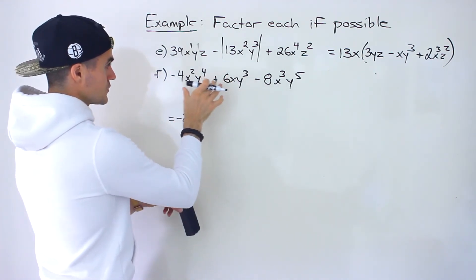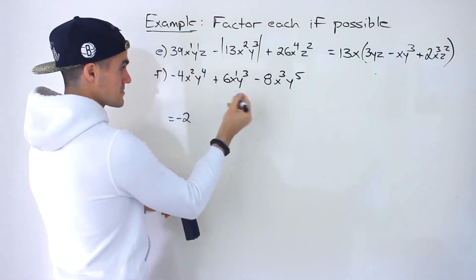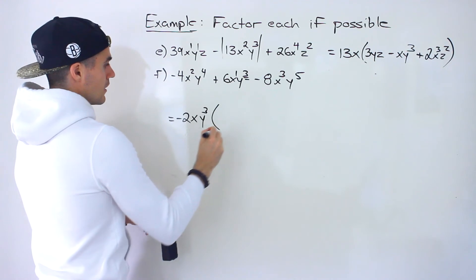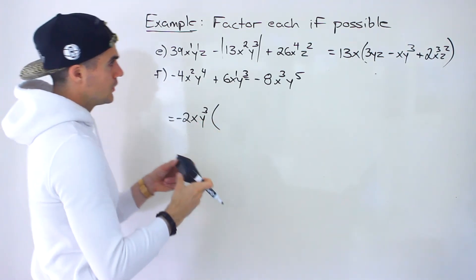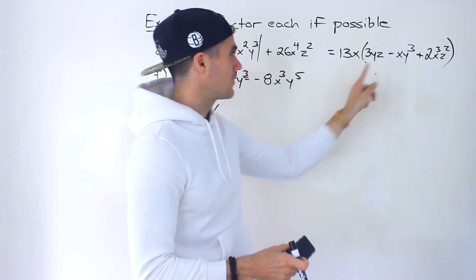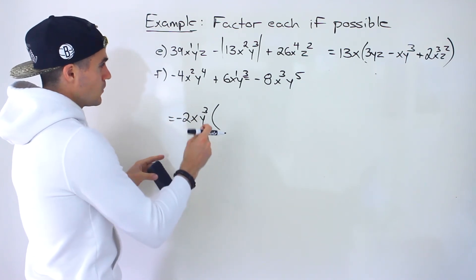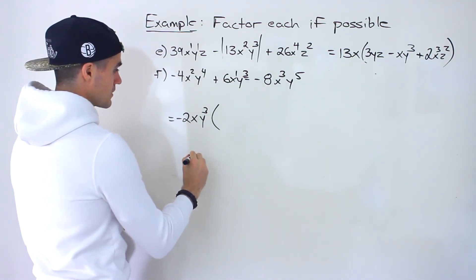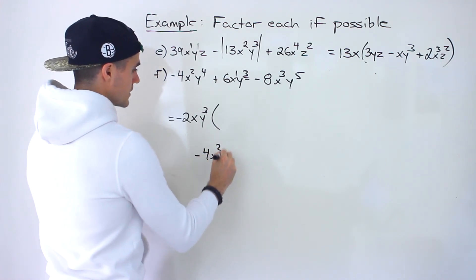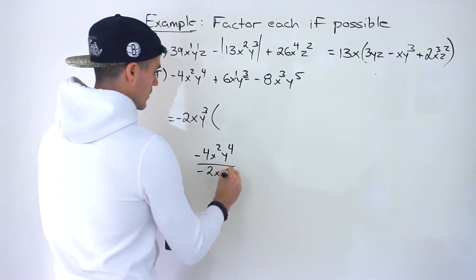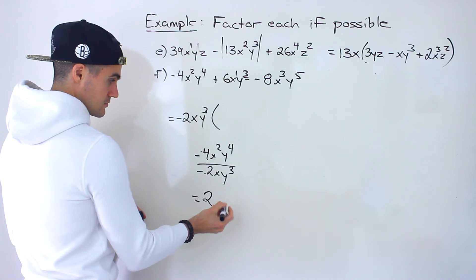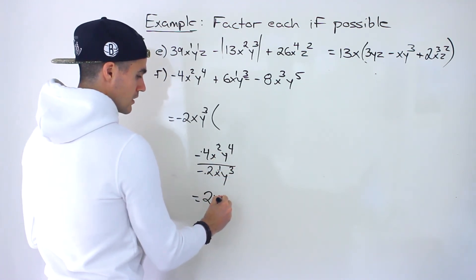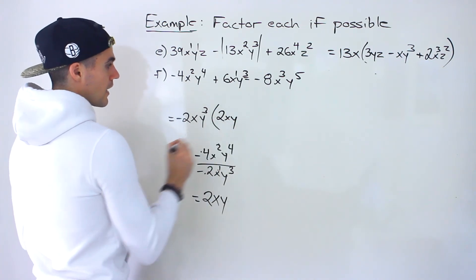For variables: x is present in all terms — lowest exponent is 1. For y: y⁴, y³, and y⁵ — lowest exponent is 3. So we take out negative 2xy³. Now dividing, and because we're taking out a negative it's important to include the signs: negative 4x²y⁴ over negative 2xy³ — negative 4 divided by negative 2 is positive 2, x² over x is x, y⁴ over y³ is y — giving 2xy.